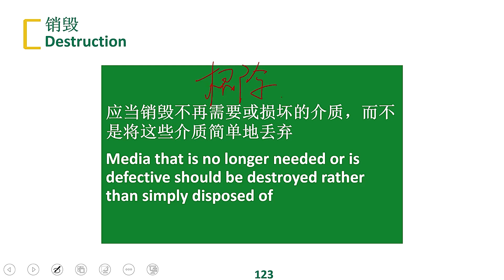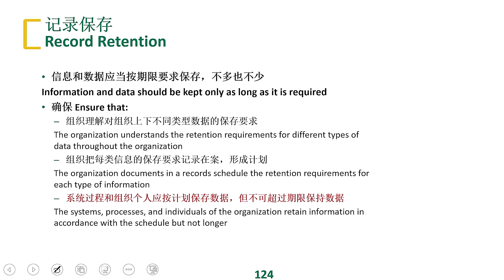This is a whole set of processes from the generation of data, through transmission, storage, and processing, to finally destroying the data. We need to consider protection across the entire lifecycle, because if there is a problem at any point in data processing, the data will leak. Throughout the whole lifecycle, all processing procedures and traces should be recorded so we can later trace and audit the full process of data flow and security protection.